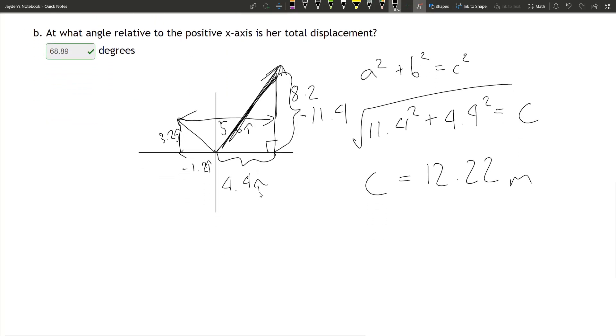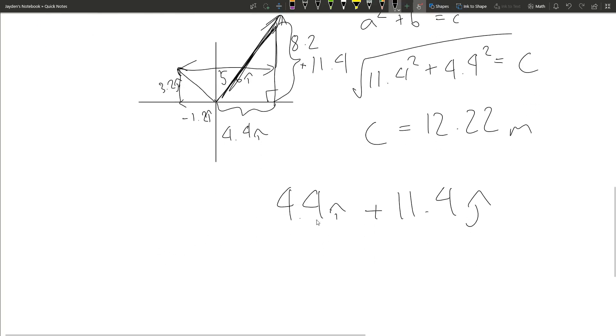Now we're looking for the angle. We know the two values, 4.4i and 11.4j. Now all we got to do is do another trig function.